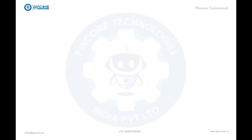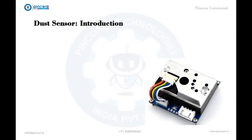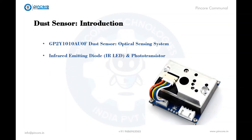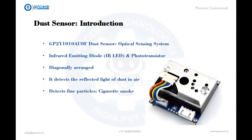The dust sensor is an optical air quality sensor. An infrared emitting diode and photoresistor are diagonally placed inside the system. It senses the reflected light and detects the dust present in the air. It is efficient enough to detect very tiny and fine particles like cigarette smoke. It also has the ability to distinguish smoke from house dust using the pulse pattern of output.